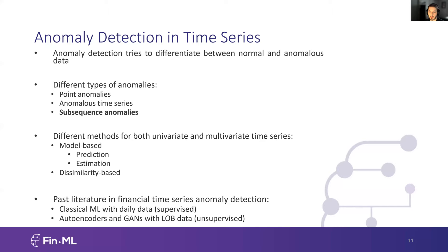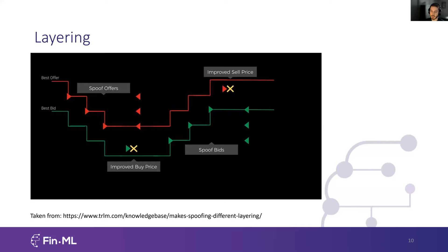We're relying on anomaly detection, which is the study of differentiating between normal and abnormal data — two kinds of data not following the same generating process. In time series, there are different types of anomalies: point anomalies (specific abnormal points in time), anomalous time series (where the entirety is anomalous), and subsequence anomalies, which is what we are working with. Only a very temporal neighborhood of the time series is abnormal — for example, maybe 100 events would be fraudulent out of about 200,000 market events in a given day.